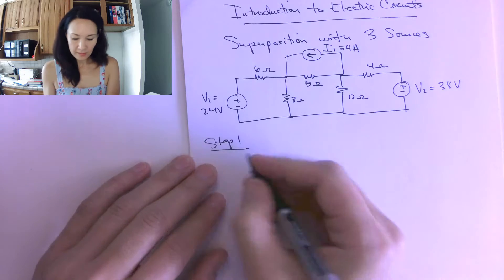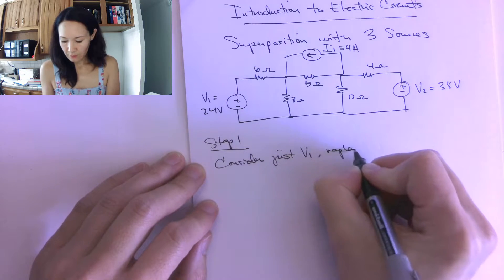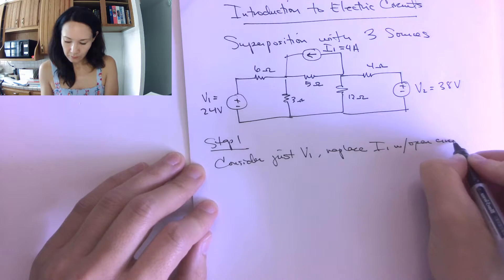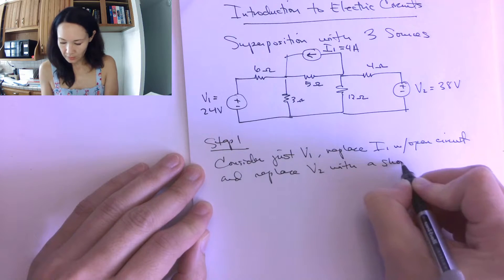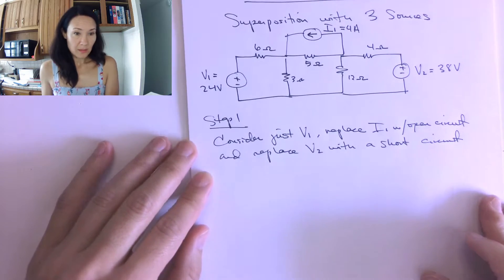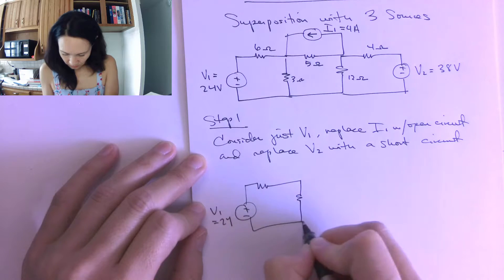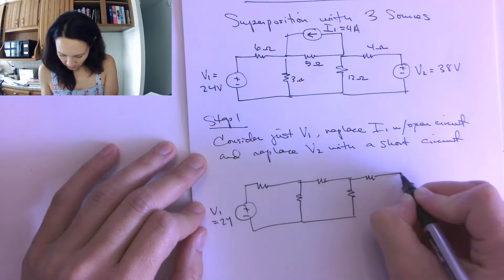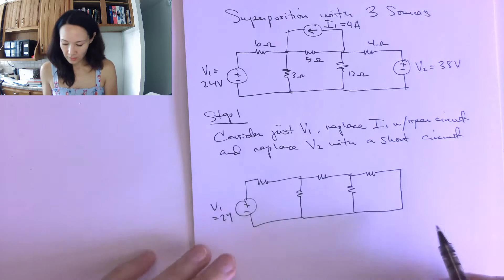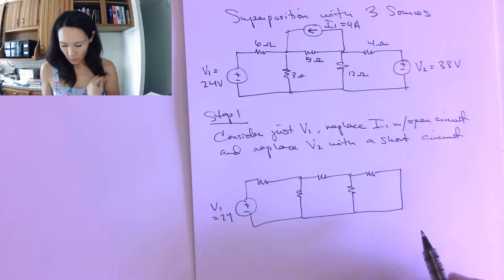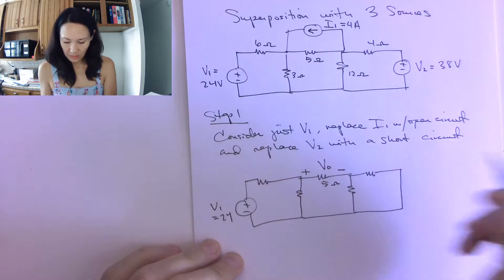For step one, let's consider the circuit with just V1. We're going to replace I1 with an open circuit and replace V2 with a short circuit. That means our circuit has just V1 in, and the I1 source is gone. Suppose we're asked for the voltage drop across the 5 ohm resistor — I'll label this as my Vout.